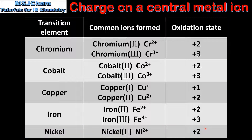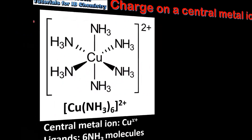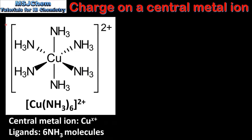From this table we can see that the charges on the ions are the same as the oxidation states. However, it's important to note that the charge on the ion is written as 2+, but the oxidation state or oxidation number is written as +2. So we'll start by looking at complex ions.